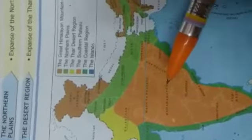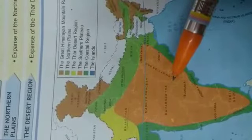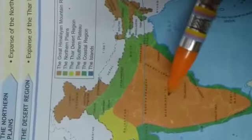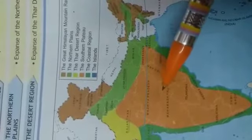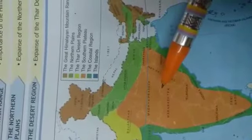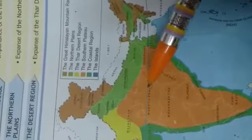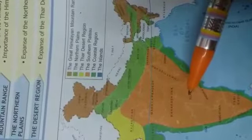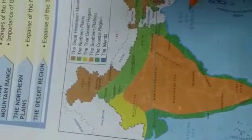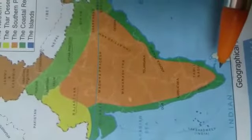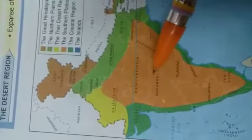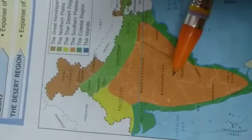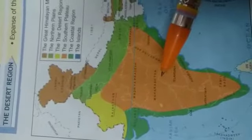Then the Southern Plateau. The southern plateaus are situated towards the south of India. They cover a triangular landmass which is mainly divided into two parts — the Central Highlands and the Deccan Plateau. They are surrounded by three large water bodies: the Bay of Bengal, the Arabian Sea and the Indian Ocean. They have rich deposits of minerals like coal, iron ore and a number of precious stones.